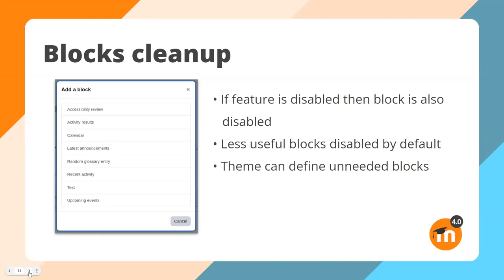Some blocks are disabled by default: the course summary block, feedback block (only for when a feedback activity is added to the homepage), remote RSS feeds (since RSS feeds are not used so much these days), and self-completion (only needed if self-completion is used for course completion). Finally, there's a new admin setting for themes to define unneeded blocks — for example, Boost doesn't need the navigation or administration blocks (those are only for the classic theme), nor the courses block since we have the my courses page, nor the section links block since the course index provides access to sections.